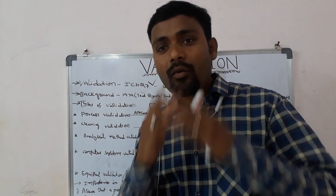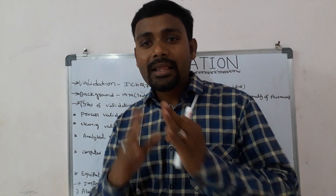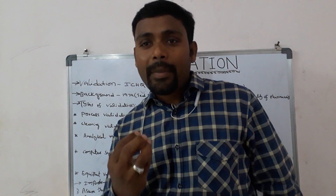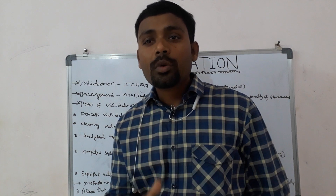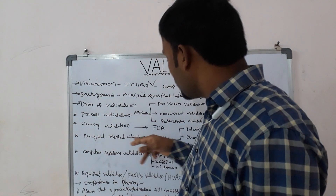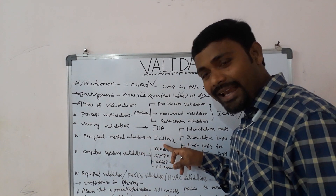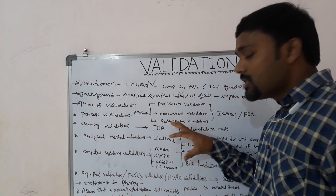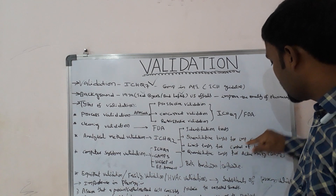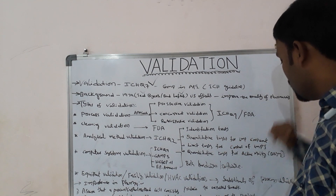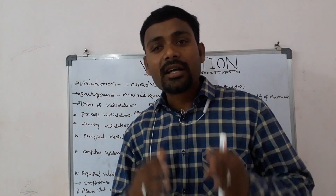Analytical method validation is a process to ensure that a test, method, or procedure used to determine the quality of a drug gives reproducible results and is suitable for its intended use. It is described in the ICH Q2 guideline and focuses on four test categories: quantitative tests for impurity content, limit tests for control of impurities, qualitative tests for identity, and assay of the drug substance or drug product.